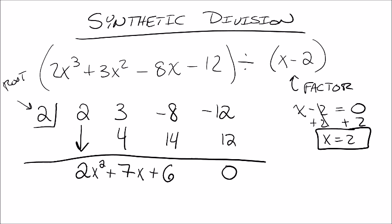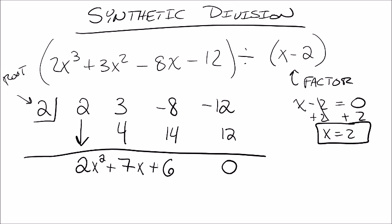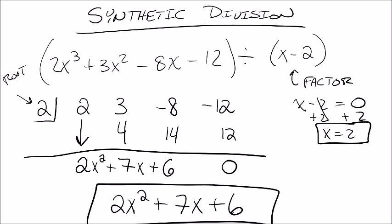And the last number there is your remainder. So using synthetic division, our division here comes out to be 2x² + 7x + 6. And that would be our answer. So that's what we get when we divide that polynomial equation by x - 2.